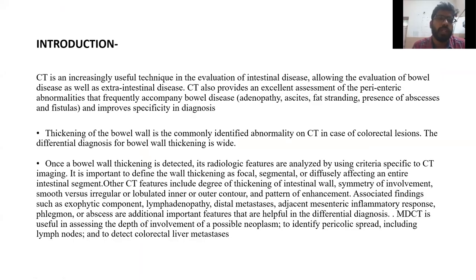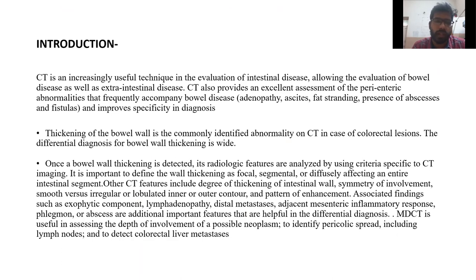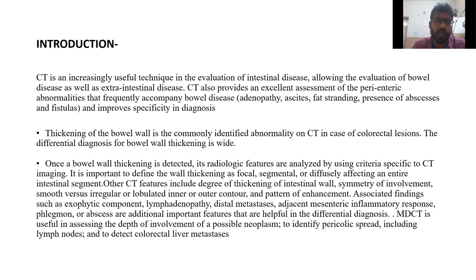Introduction. CT is an increasingly useful technique in evaluation of intestinal diseases along with evaluation of extra-intestinal manifestations. Important CT findings for colorectal lesions include defining the wall thickening, which can be focal, segmental, or diffuse. Wall thickening can be asymmetric or circumferential involvement of the bowel lumen, with smooth, irregular, or lobulated inner or outer contour, and the degree and pattern of enhancement. Associated adjacent inflammatory changes like mesenteric inflammatory response, abscess, phlegmon, lymphadenopathy, or distant metastatic deposits provide additional features helpful in narrowing the differential diagnosis.